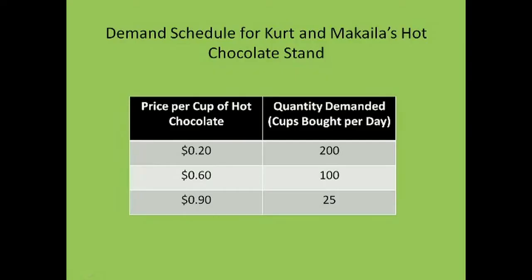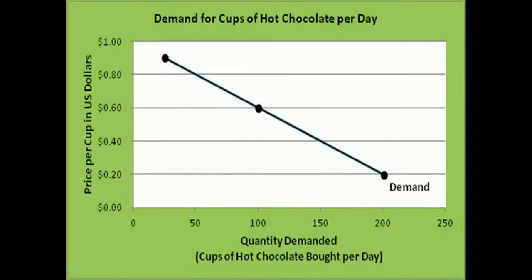Our friends Kurt and Mikaila introduced us to several basic economic concepts. First, we are introduced to the law of demand. The law of demand states that as prices are increased, the quantity demanded of a good or service decreases. The table shows that each time Kurt and Mikaila raised their price, sales dropped. First, they sold 200 cups at 20 cents a cup, then 100 cups at 60 cents, and finally only 25 cups when they raised their price to 90 cents a cup.